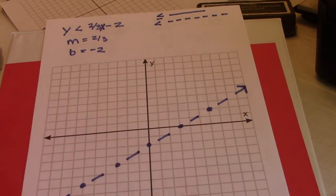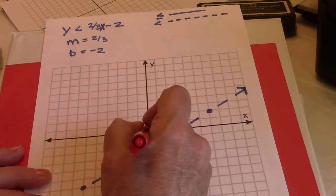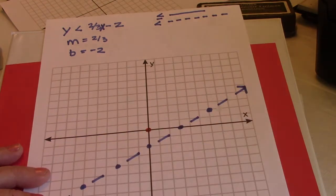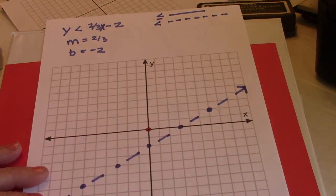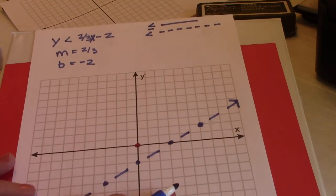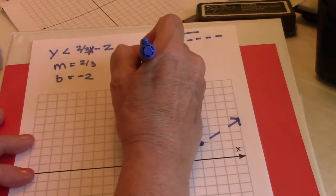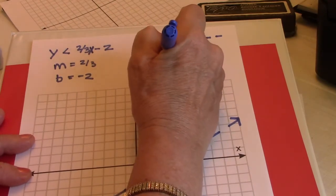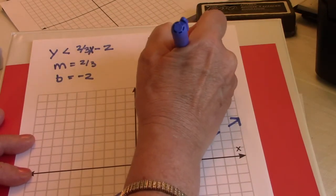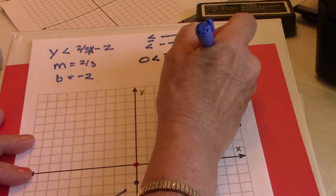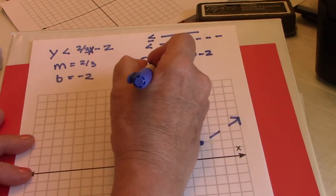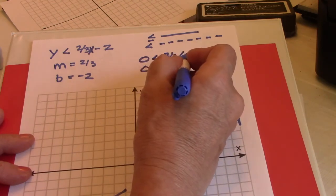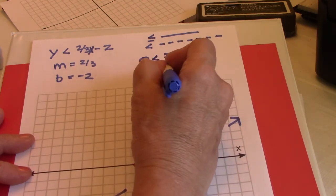Okay, now I need to figure out whether I'm shading above or below. So what I do is I pick a test point. So I'm going to pick my test point. If I ever can get zero, zero for a test point, I'm going to pick that because it's just so easy to insert zero, zero into my equation. So I get zero for y is less than two-thirds times zero minus two.